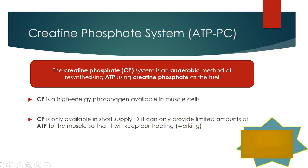The creatine phosphate system is an anaerobic method of resynthesizing ATP using creatine phosphate as the fuel. Creatine phosphate is a high-energy phosphate compound available in the muscle cells. The unfortunate thing about creatine phosphate is that it's only available in very short supply, and it can only provide limited amounts of ATP to the muscles so that they will keep contracting. The downfall of this system is that creatine phosphate is only available in very short supply.